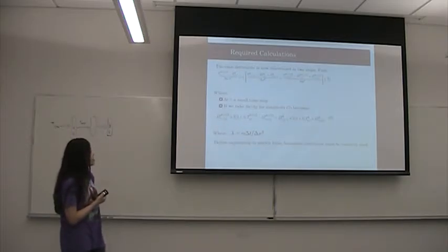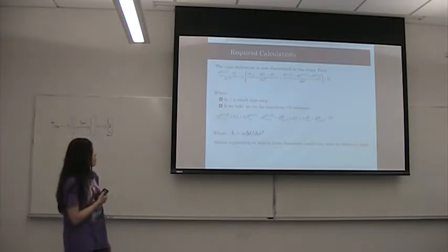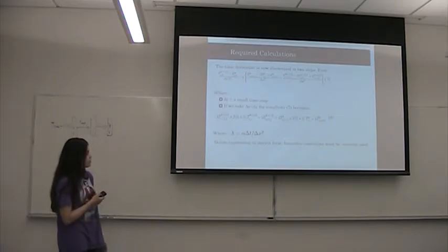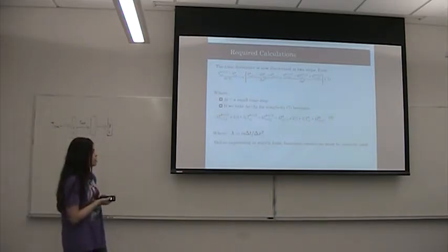And then the time derivative is discretized in two steps. First, it'll break down to equation 7, where delta T is a small time step, I think it said approximately 10 seconds.